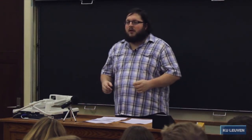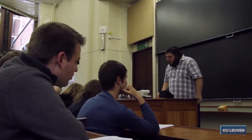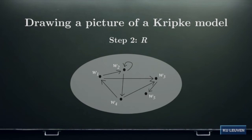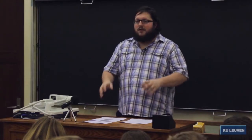The way I like to think of a Kripke model is by drawing a picture. We start with a set of possible worlds — say five worlds W1 through W5. Then we specify the accessibility relation as a collection of arrows: for example, W1 sees W2 and W3, and W2 sees itself and W4. Finally, we specify the valuation: suppose there are two letters P and Q, where P is true in W3 and W5, and Q is true in all worlds except W3.